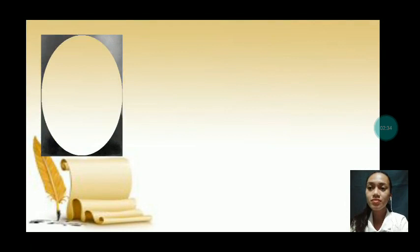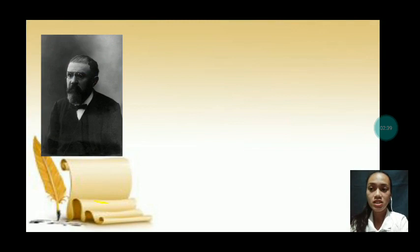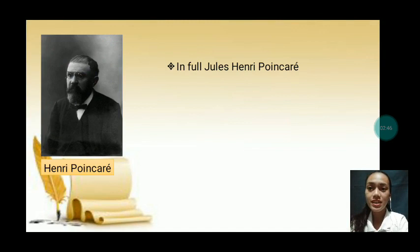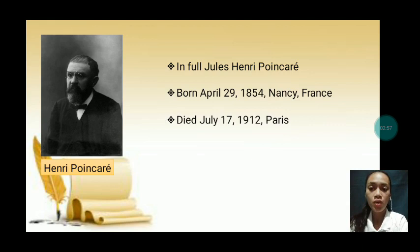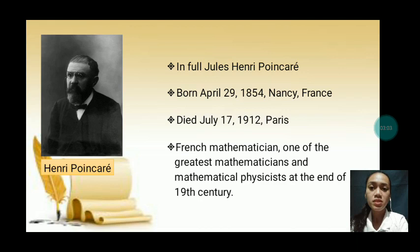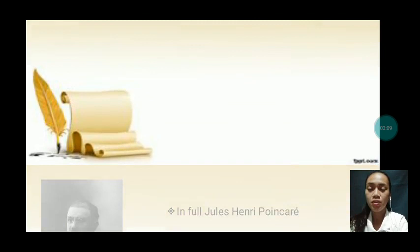Our eighth and last mathematician in the 19th century is Henri Poincaré. In full, he is Jules Henri Poincaré. He was born on April 29, 1854 in Nancy, France, then died July 17, 1912 in Paris. He was a French mathematician, one of the greatest mathematicians and mathematical physicists at the end of the 19th century.